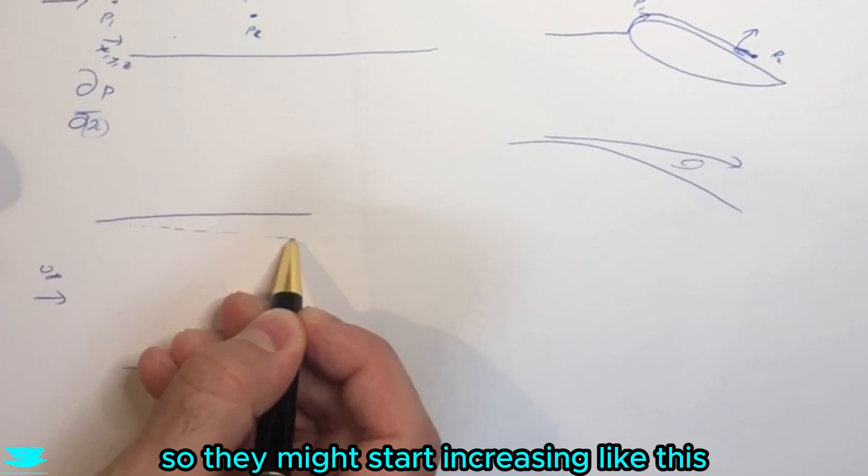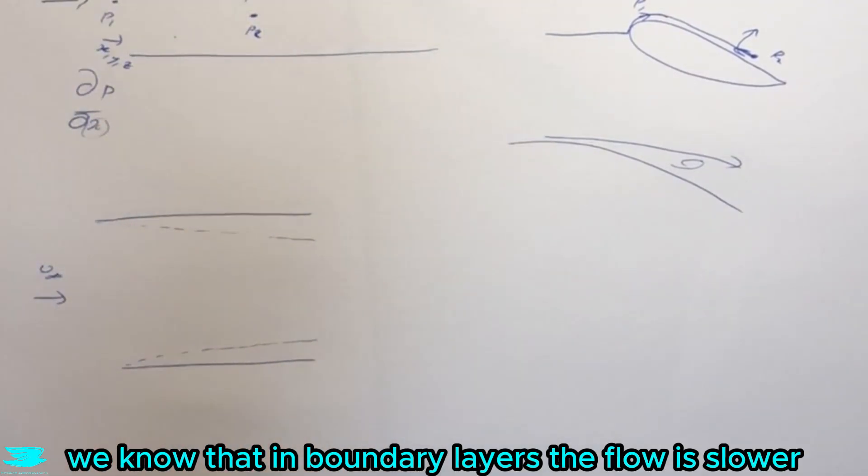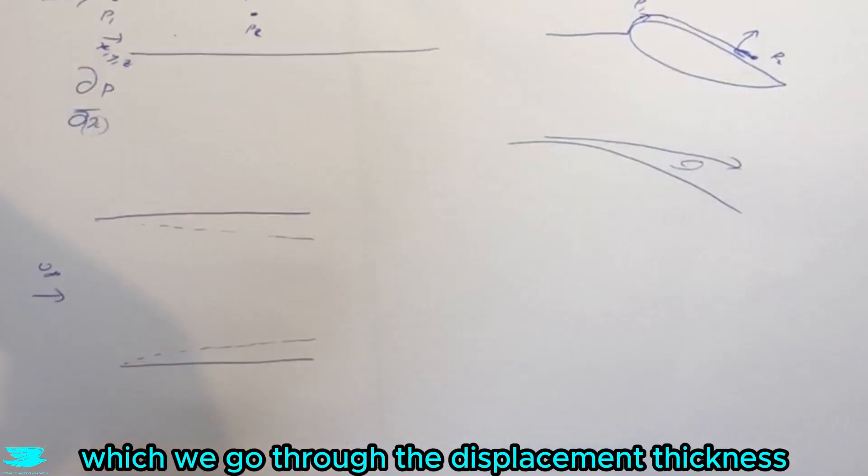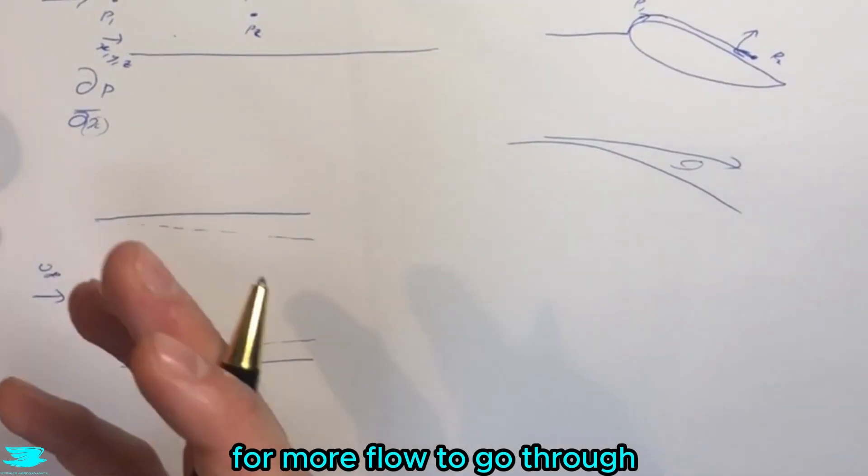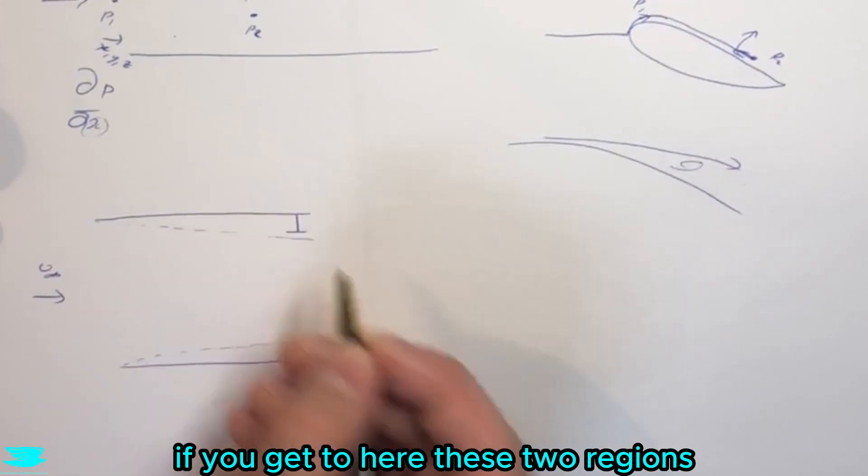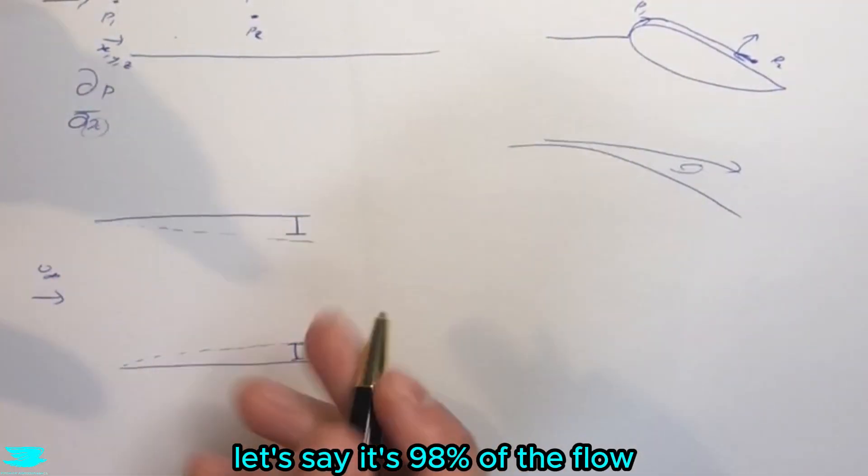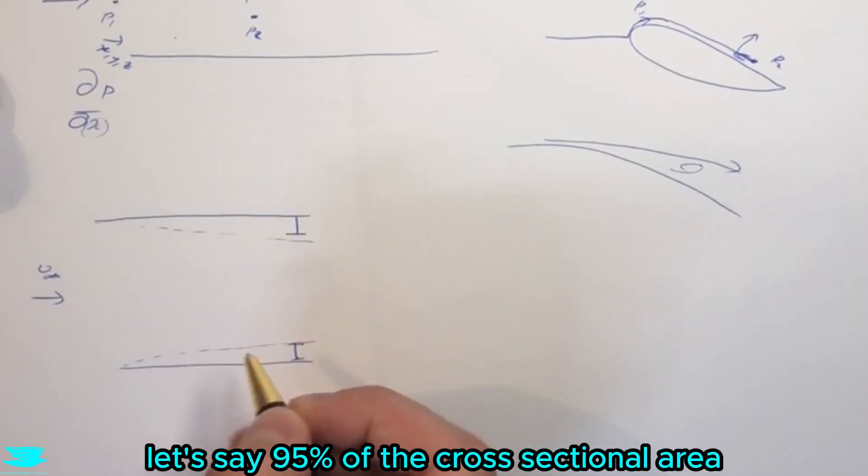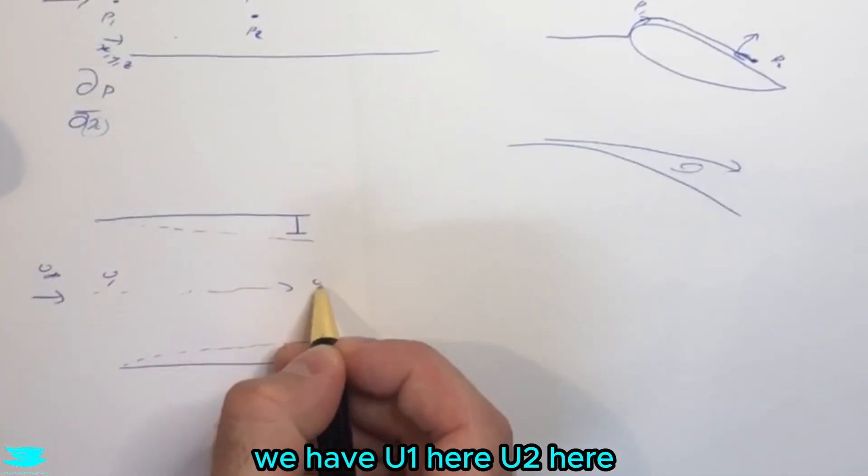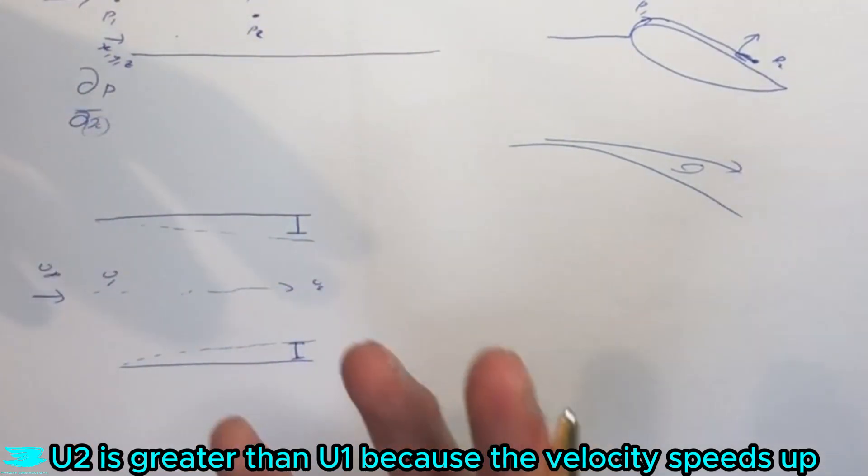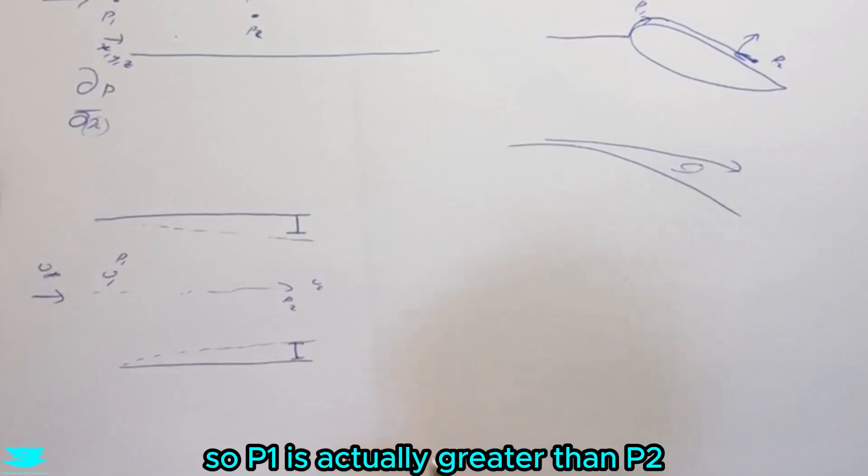We know that in boundary layers the flow is slower, and if you look at displacement thickness, we can understand that we effectively have less area for flow to go through. So let's say 98% of the flow has to now go through 95% of the cross-sectional area - it needs to speed up a little bit. As it speeds up we have u1 here and u2 here, where u2 is greater than u1. From Bernoulli's equation, we know the pressure will drop, so p1 is actually greater than p2.